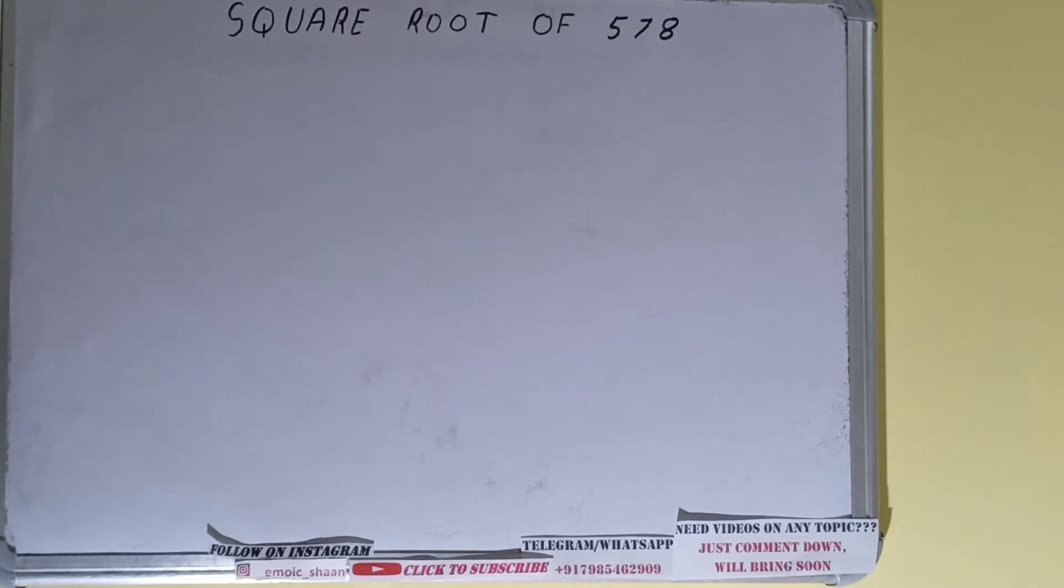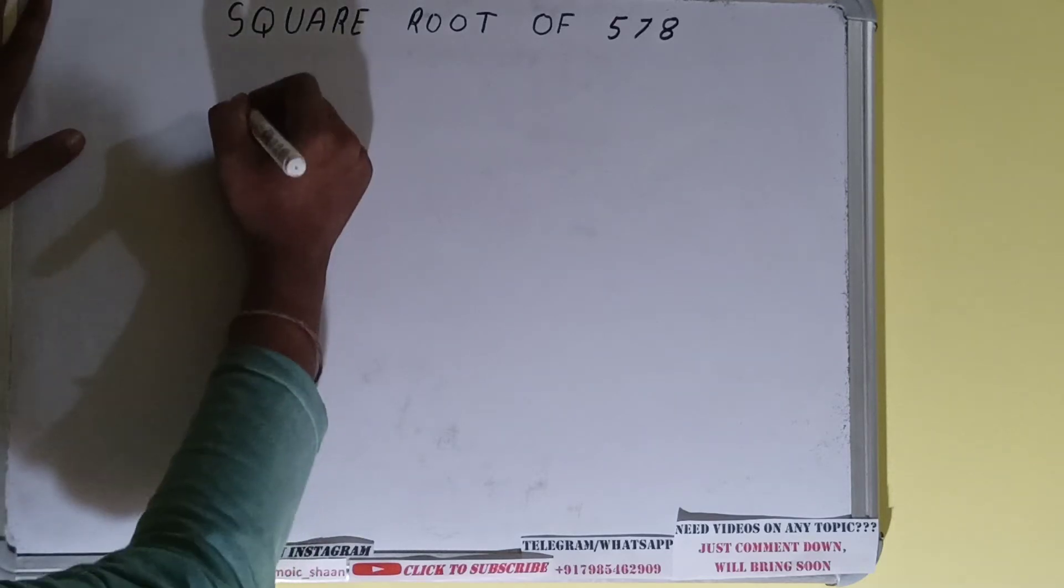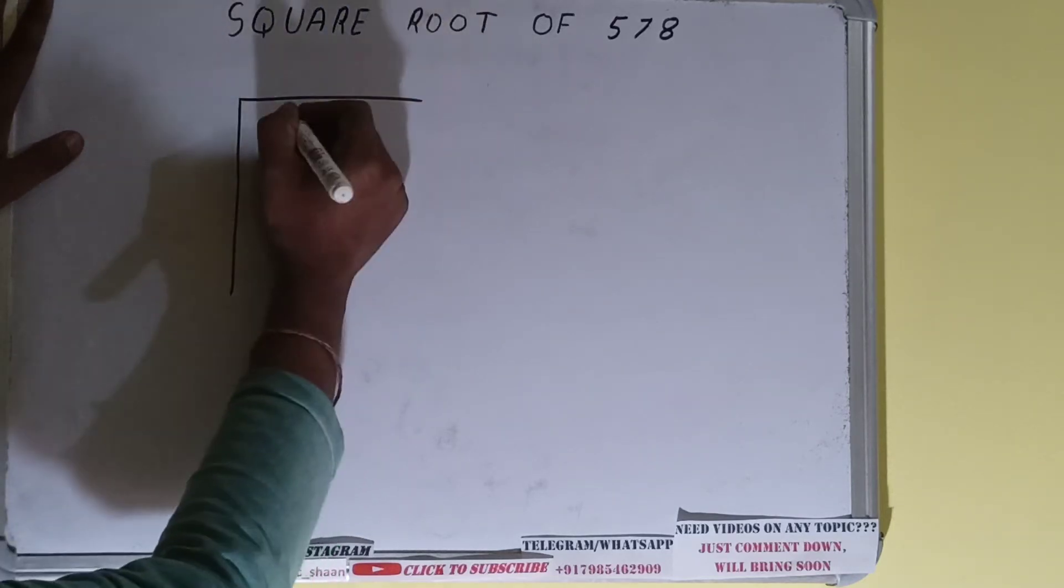Hello friends, and in this video I will be helping you with the square root of the number 578. So let's start. We'll be using the division method over here for finding out the square root of 578. So first we need to write the number like this.